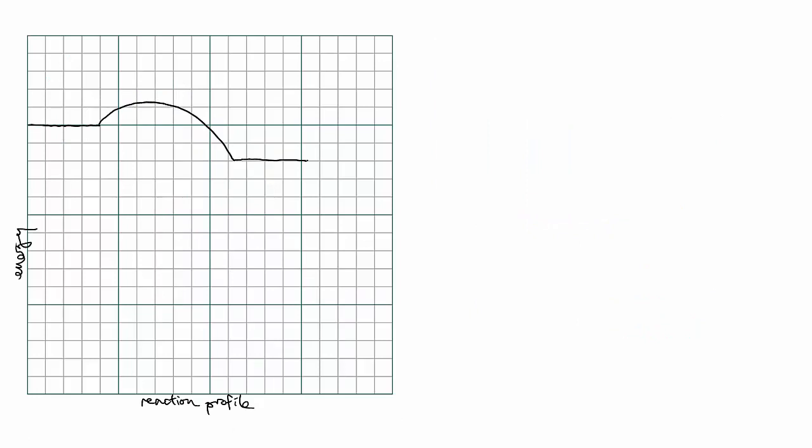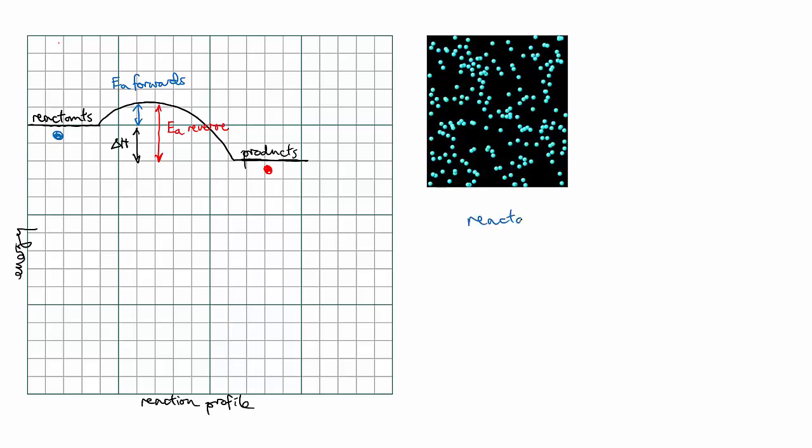If, instead, we have a reaction where the activation energy in either direction is relatively small, then the chances are that there will be some product molecules with sufficient energy to undergo the reverse reaction and turn back into reactants. This means that two reactions are happening simultaneously, the forward reaction and the reverse reaction.